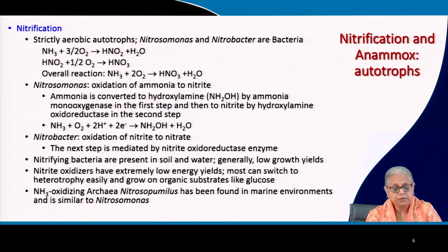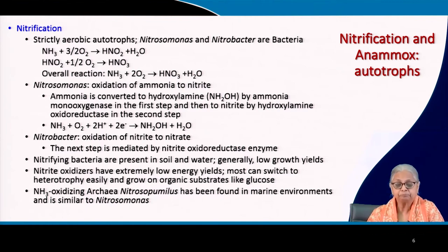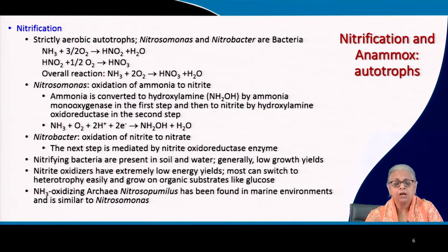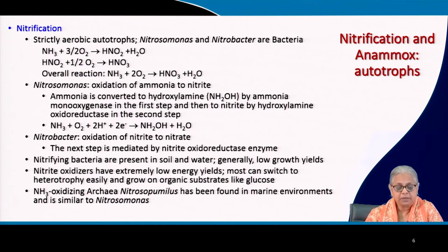In many cases, these autotrophic bacteria can switch to heterotrophy if organic substrates like glucose are available. Nitrosomonas and Nitrobacter belong to the domain Bacteria. However, one species of ammonia oxidizing archaea has been found in marine environments and is very similar in its mechanism of utilizing ammonia to Nitrosomonas. This archaeon is Nitrosopumilus, which appears to have been discovered relatively recently.